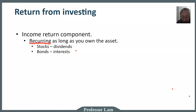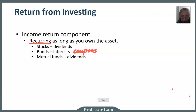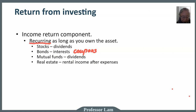For bonds, you earn interest — sometimes referred to as coupons, so that's another term to remember. Interest on bonds is called coupons. Mutual funds oftentimes also pay dividends. If you purchase a real estate investment, you'll receive rental income after expenses. The key for the income component is that income is recurring.